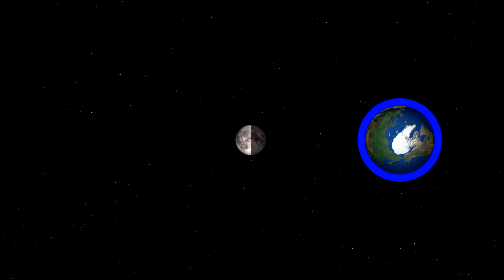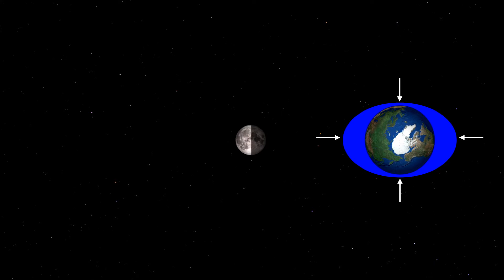Let's review the effects of the moon's gravity on the waters of the earth. If we consider only the moon, its effect is to stretch the oceans, creating two high tides — one pointing at the moon and one pointing away from the moon — and two low tides at right angles to these.